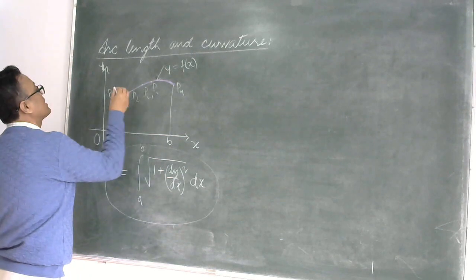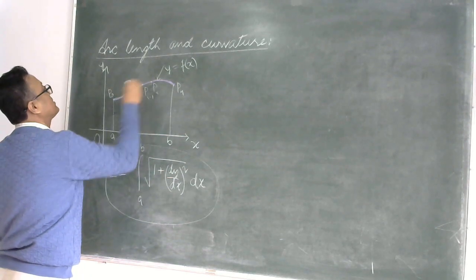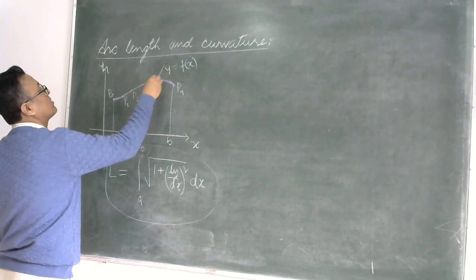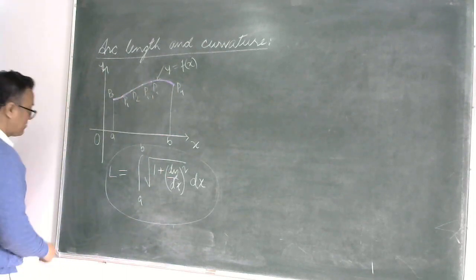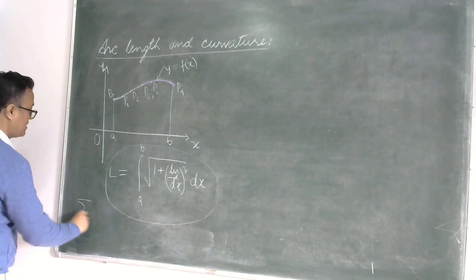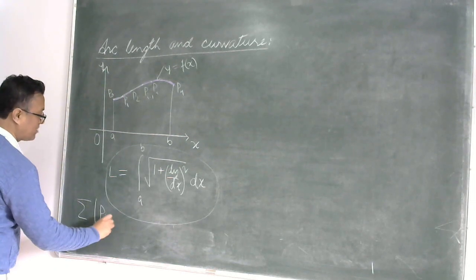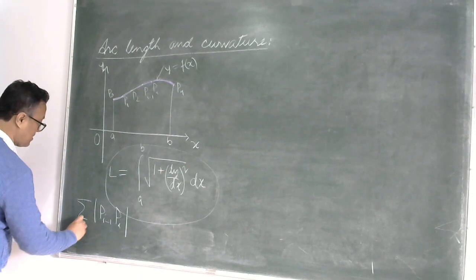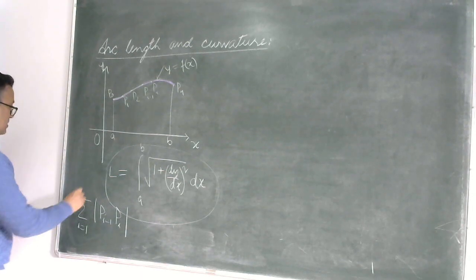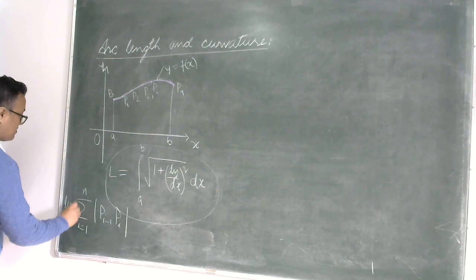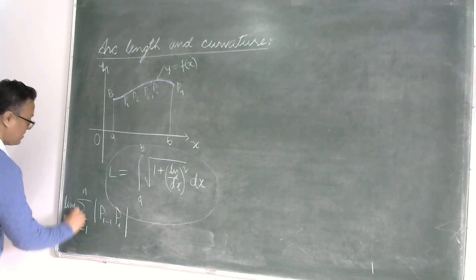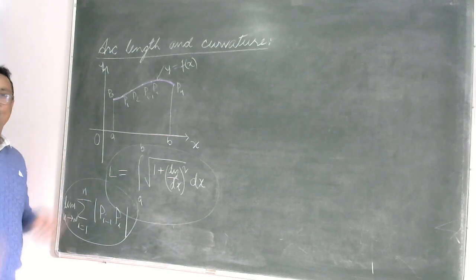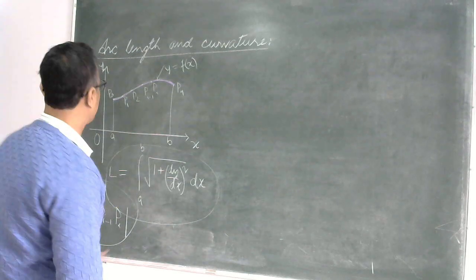What we did was simply draw straight lines from each of those points to the next one in the sequence. After that, the length of the curve is going to be nothing but this formula.